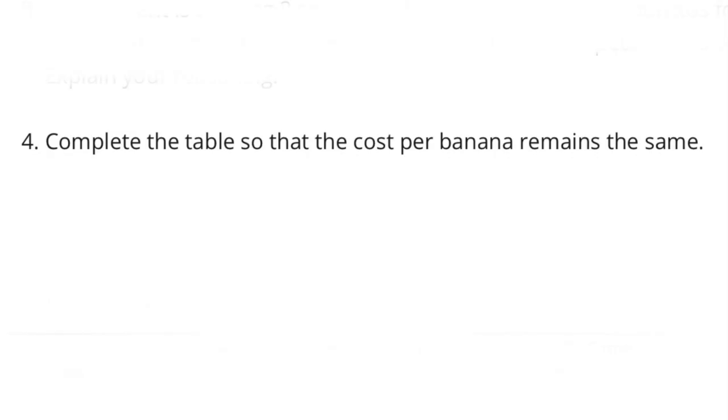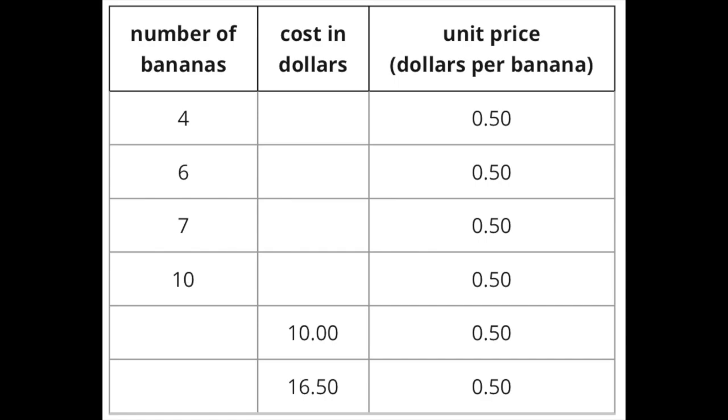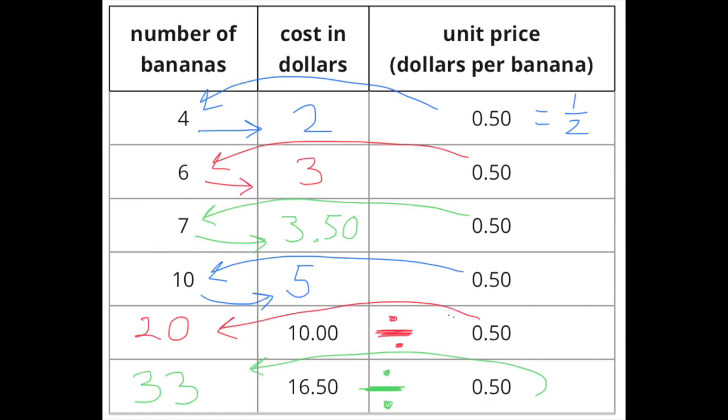Number 4. Complete the table so that the cost per banana remains the same. $0.50 is a half a dollar. So when I'm multiplying, I'm going to say half of instead of times. What's half of 4? 2. What's half of 6? 3. What's half of 7? $3.50. What's half of 10? 5.